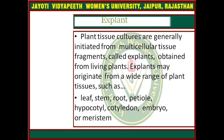What is an explant? Plant tissue cultures are generally initiated from multicellular tissues called explants, obtained from living plants. Explants may originate from a wide range of plant tissues such as leaf, stem, root, petiole, hypocotyl, cotyledon, embryos, and meristem. The term explant is basically used in plant tissue culture.